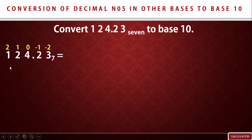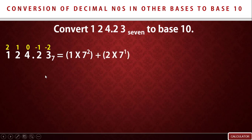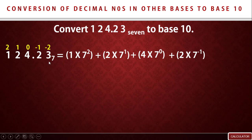For the expansion, take the first digit 1 and multiply by the base raised to the power on top: 1 times 7 raised to power 2. Then plus 2 times 7 raised to power 1. Then plus 4 times 7 raised to power 0. For the decimal fraction: plus 2 times 7 raised to power minus one, and plus 3 times 7 raised to power minus two.